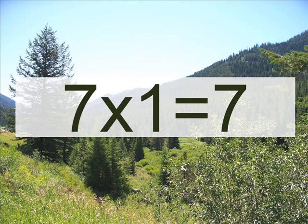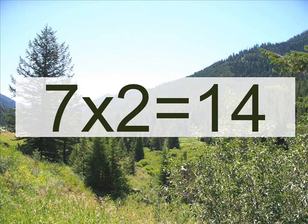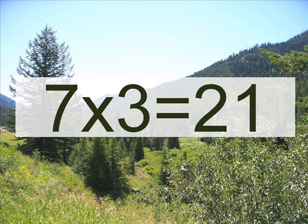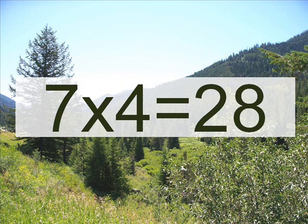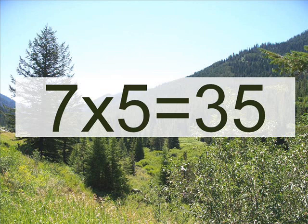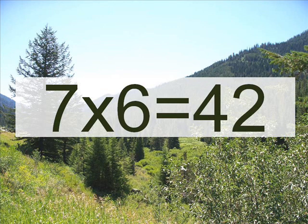7 times 1 equals? 7. 7 times 2 equals? 14. 7 times 3 equals? 21. 7 times 4 equals? 28. 7 times 5 equals? 35. 7 times 6 equals? 42. 7 x 6 equals 42.